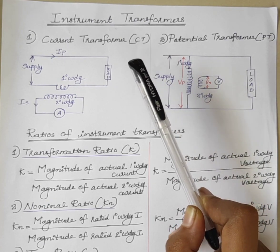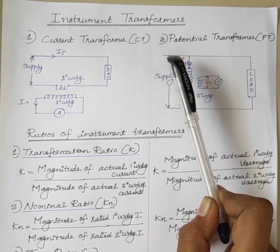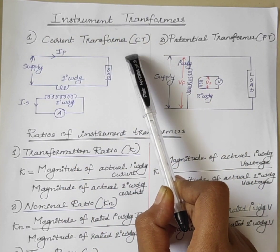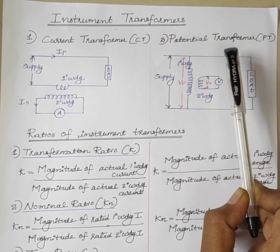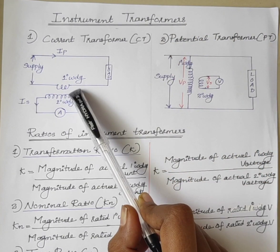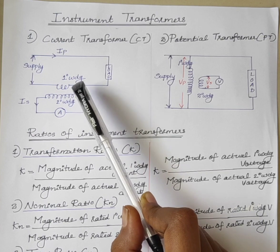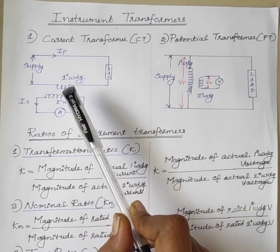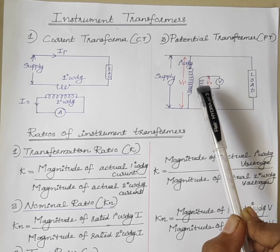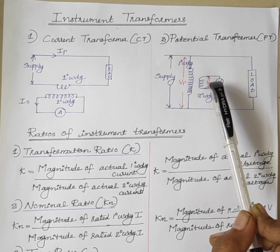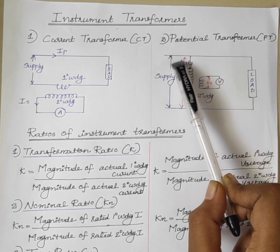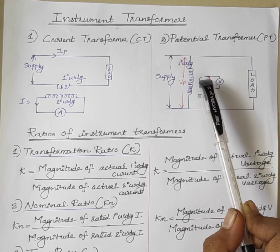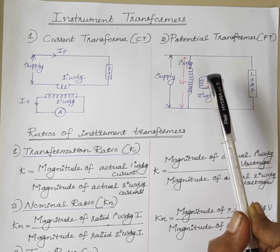Instrument transformers are classified as current transformer CT and potential transformer PT. The transformer used for measurement of current is called current transformer, and the transformers used for voltage measurements are called voltage transformers or potential transformers, or simply PT.